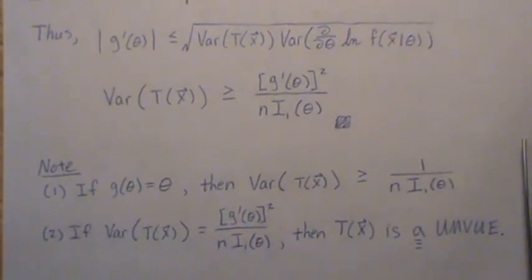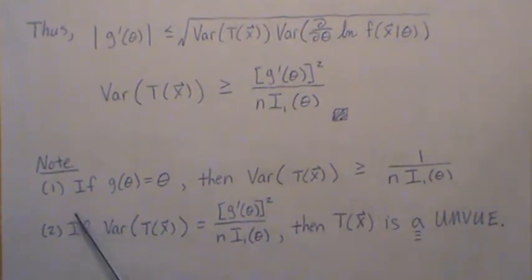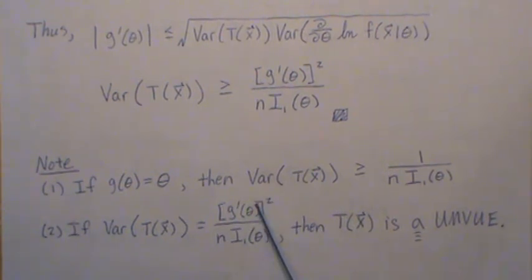Now, a few notes, two notes, that if our function of our known parameter is just the parameter itself, then the variance associated with any unbiased estimator of the parameter is greater or equal to this number, because this numerator is the derivative of theta, which is just one.